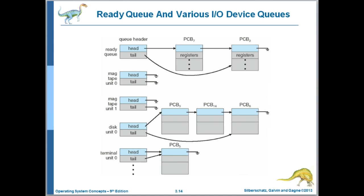The ready queue is a list of the PCBs of all processes that are in the ready state. Then we have a number of lists, one per device. You can see that no processes are waiting on a magnetic tape, and three processes are waiting on a disk unit. Although there is one 'wait state' for a process, there are multiple wait queues — one per device upon which a process may be waiting.